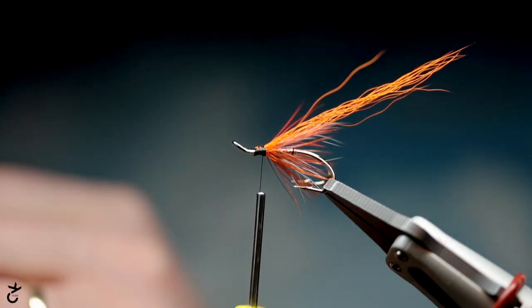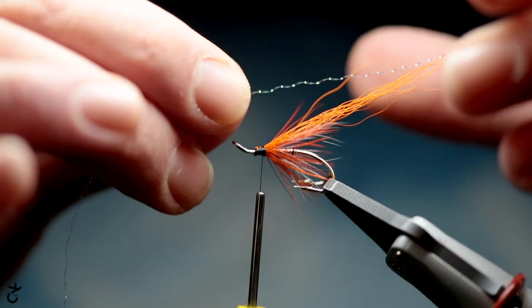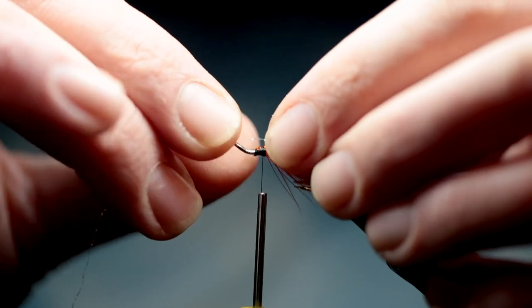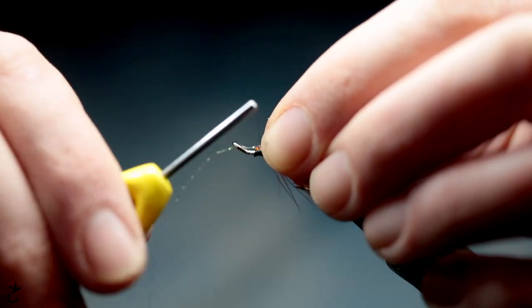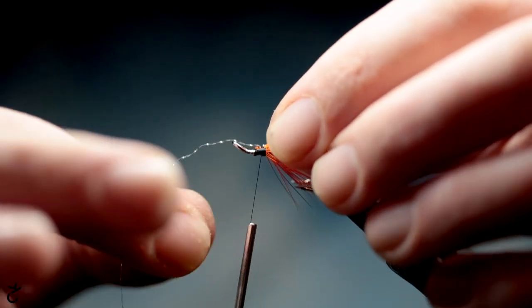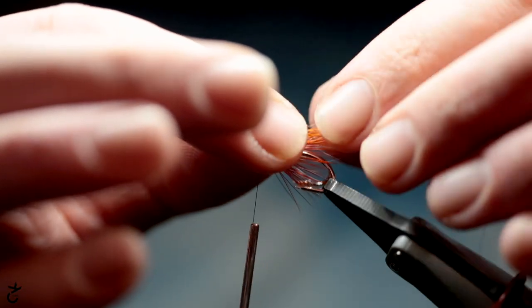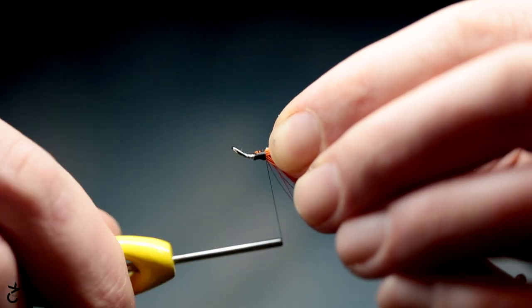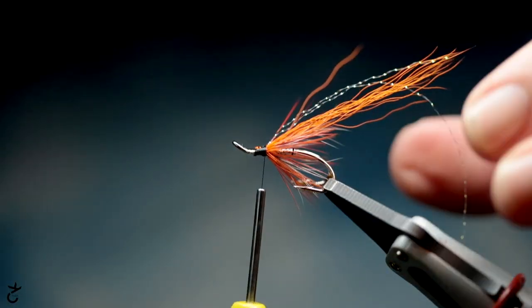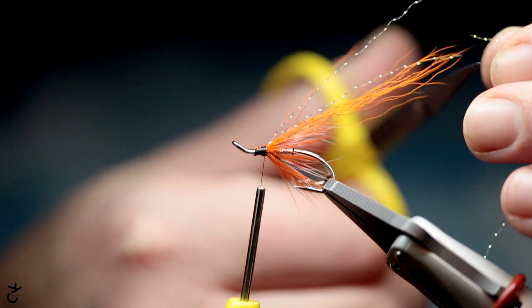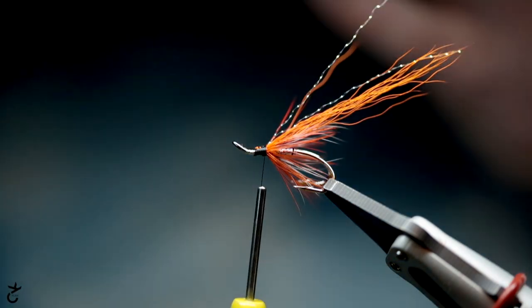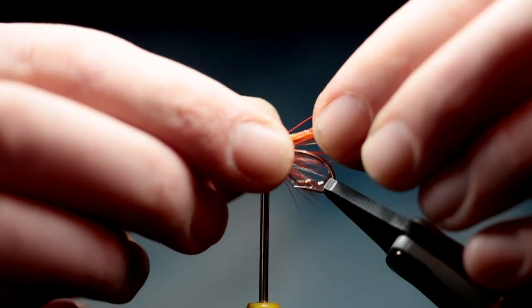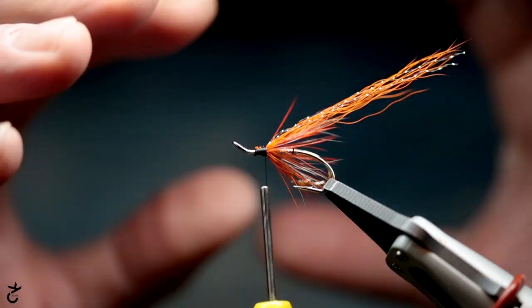I'm just going to add two strands of flashaboo. This is just pearl flashaboo, nothing too dramatic. So one in there and then just folding back for security. I'm not bothered that I haven't tied in the front of this bit just yet. I'm trying to minimize the amount of thread on this front bit for the moment.